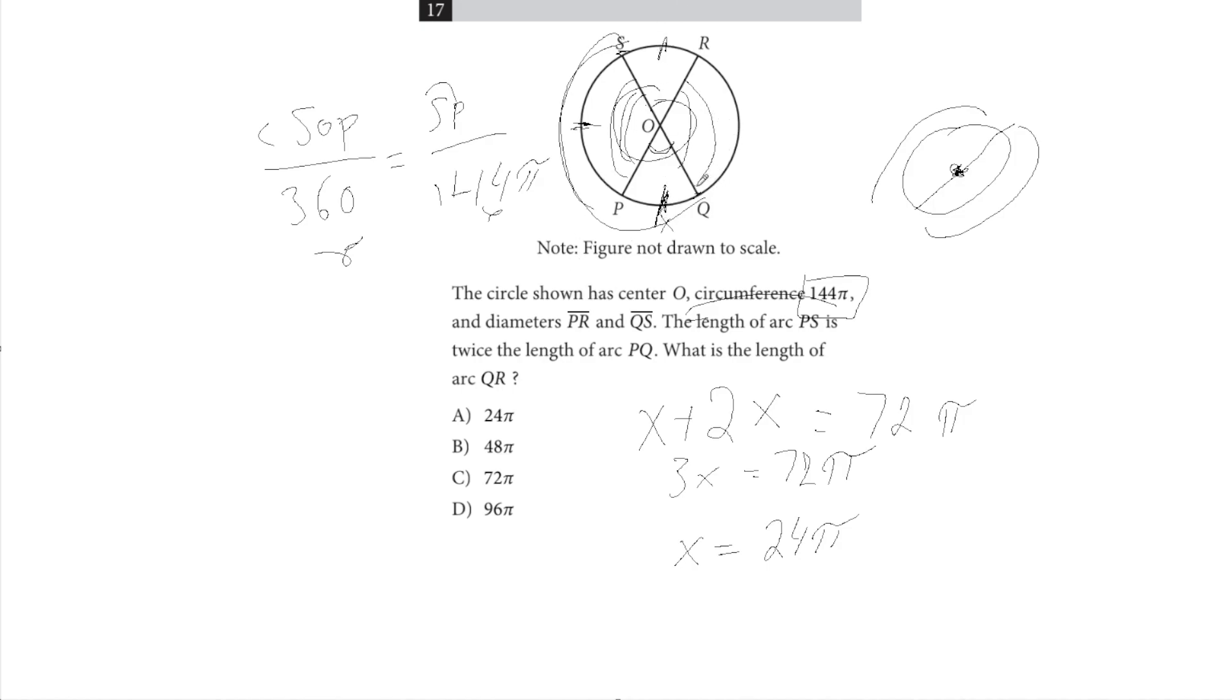So now we want to find the length of QOR. Well, we know that this length is going to be the same as this length. And length SP is simply 2 times 24 pi, so 48 pi. And of course, this arc length and this arc length are the same, so that's our answer. So we get B, 48 pi.